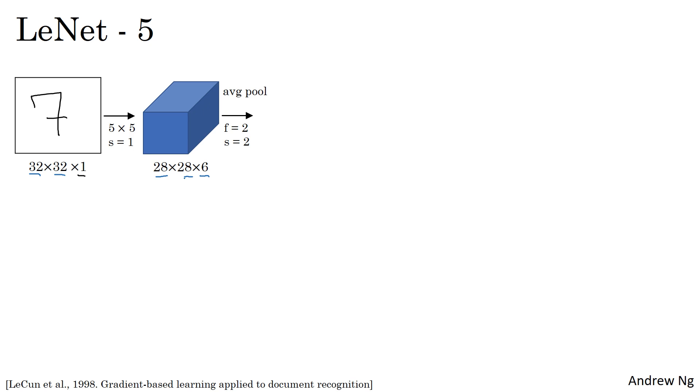Then the LeNet neural network applies pooling. Back then, when this paper was written, people used average pooling much more. If you're building a modern variant, you'd probably use max pooling instead. But in this example, you average pool. With a filter width of 2 and a stride of 2, you reduce the dimensions, the height and width by a factor of 2. So you now end up with a 14 by 14 by 6 volume.